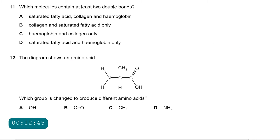Question 11: which molecules contain at least two double bonds? Proteins and amino acids contain double bonds because of the carboxylic acid group. A saturated fatty acid is incorrect. Collagen is a protein — correct. Haemoglobin is also correct. For option B — collagen and saturated fatty acid only — incorrect. Haemoglobin and collagen only, option C — correct because both are proteins. The answer is C.